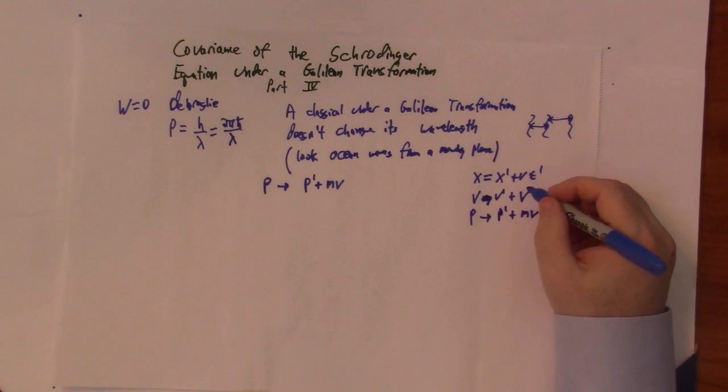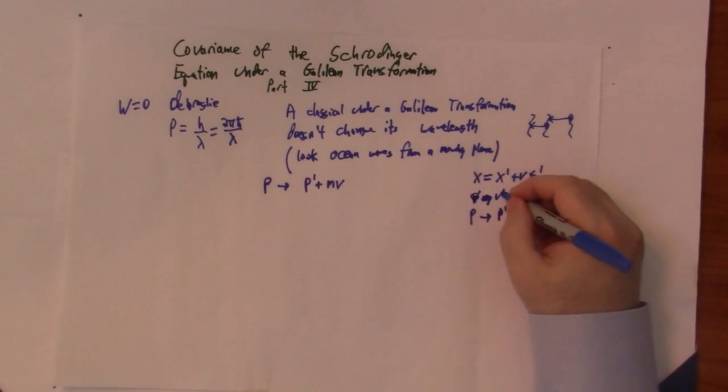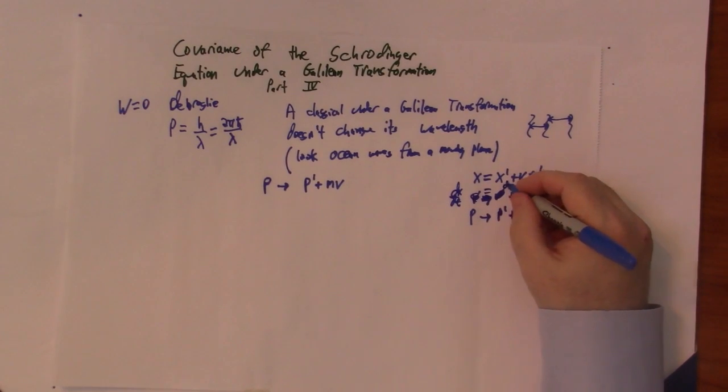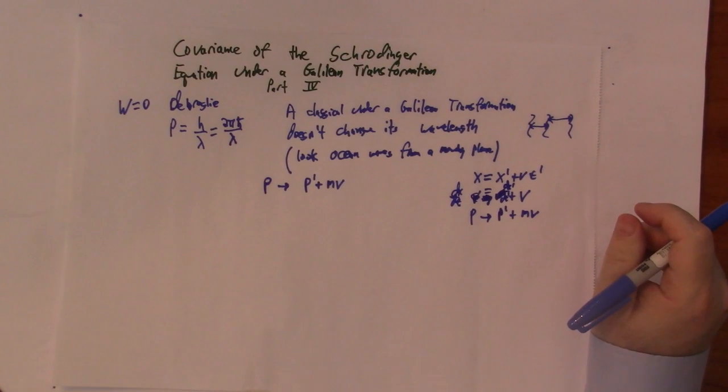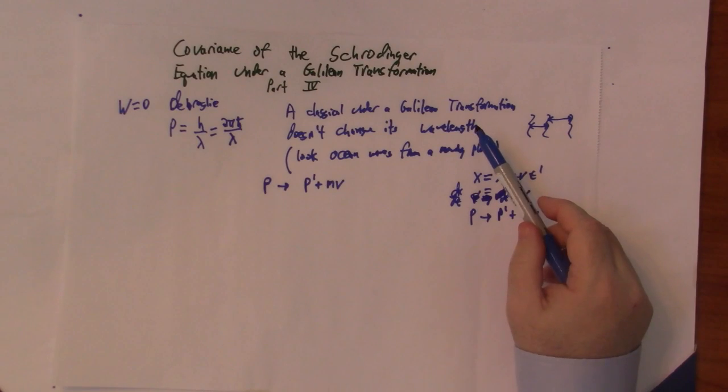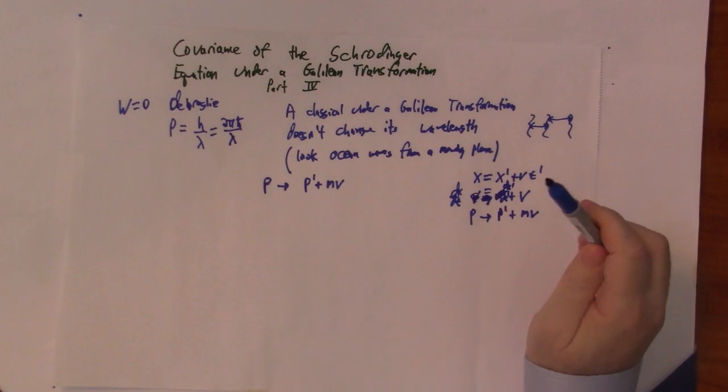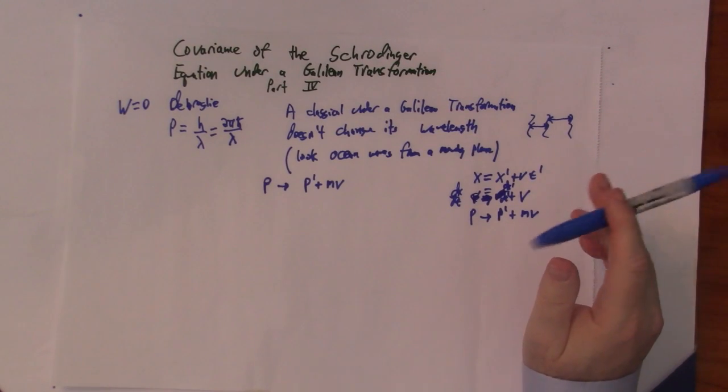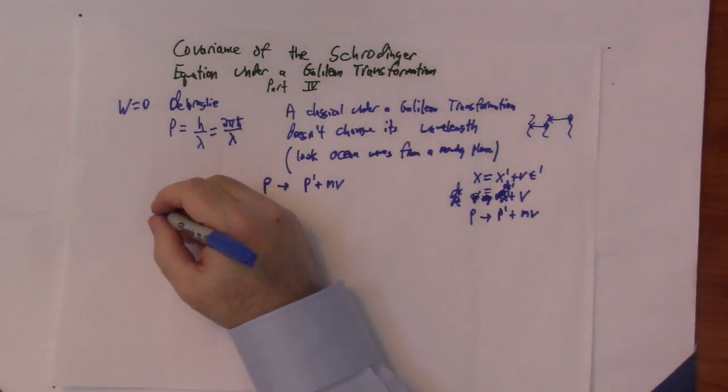So, it seems as if we have sort of like a contradiction between the de Broglie relationship and the Galilean transformation. And it turns out that it's a paradox, but there's an easy resolution of the paradox.